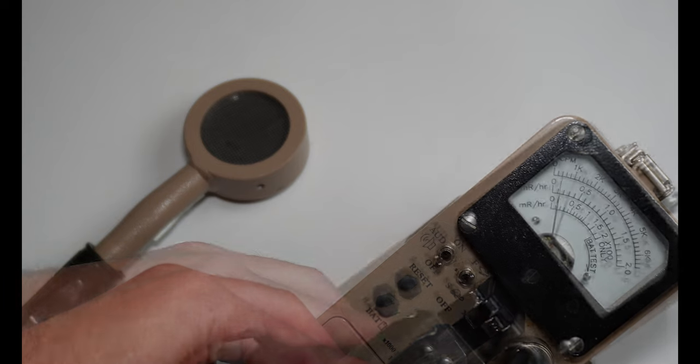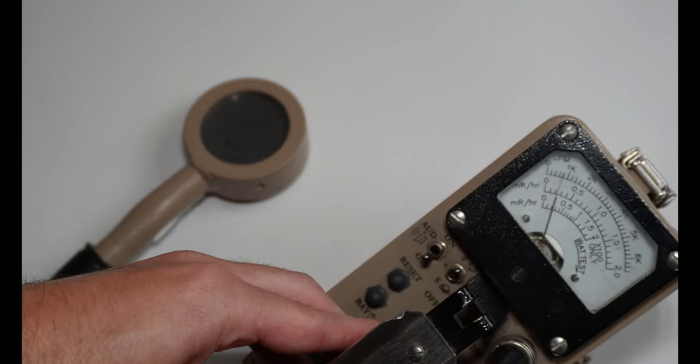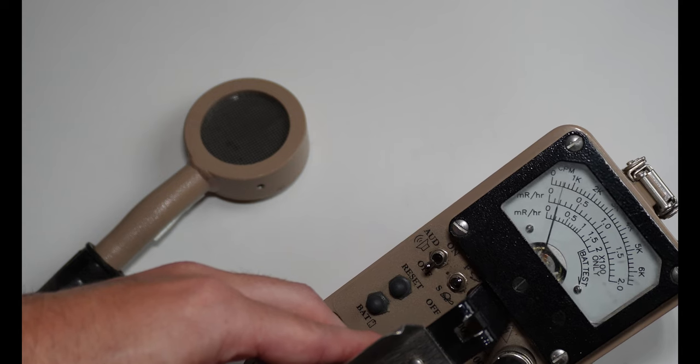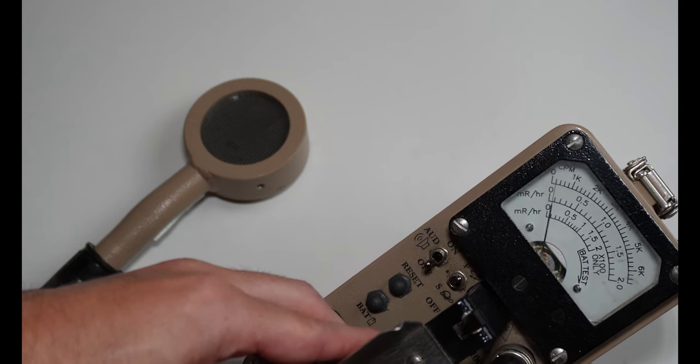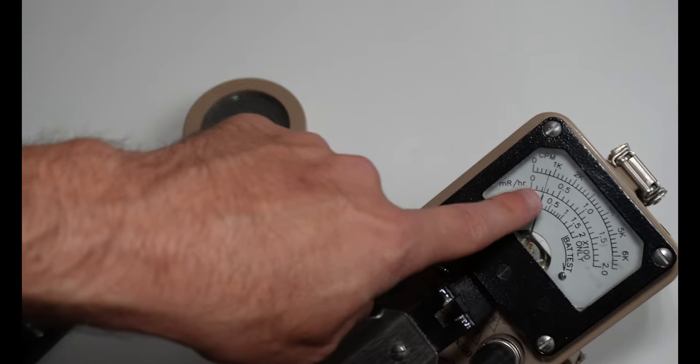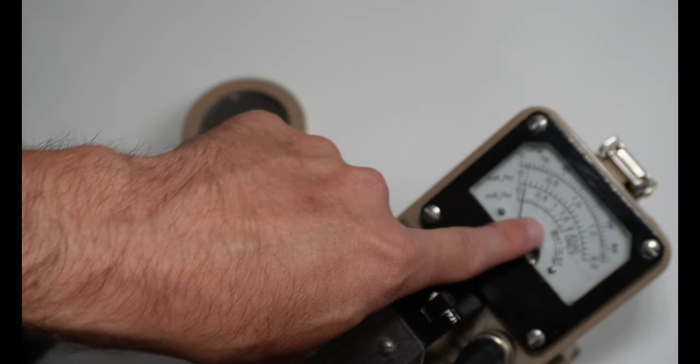I'm going to flip the audio off. So when you're using your Geiger counter, when you're taking exposure rate or surveys, you're going to be using most of the time that middle scale, the MR per hour in the middle, the mid-range.